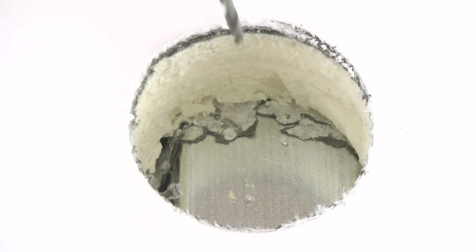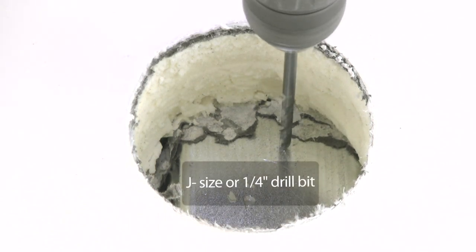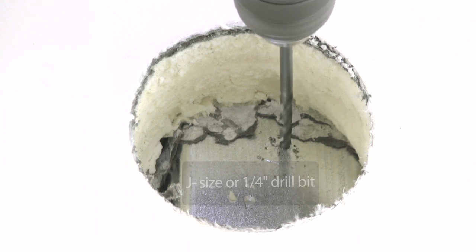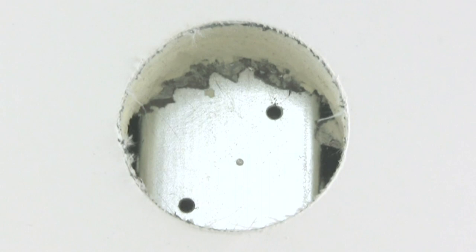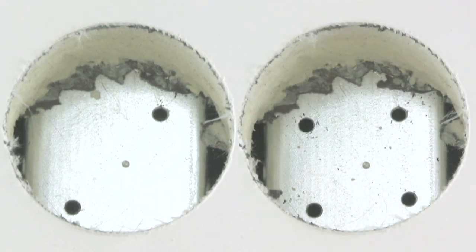Drill your pilot holes using either a J-sized or quarter-inch drill bit. Depending on the specifics of the structure, you may drill holes for either two or four bolts. It's highly recommended that you consult the building's engineer of record when making this important decision.